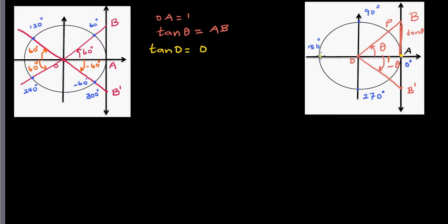When it comes to 180 degrees — the particle has moved anticlockwise and arrived at 180 — you again join that point with A, and the length of AB is again 0. That's why tan 180° = 0. We'll confirm this on the calculator.